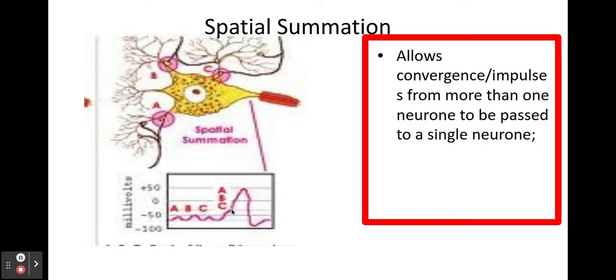But if all are triggered at the same time, if all release neurotransmitter at the same time it allows convergence of those signals so that I'm going to get depolarisation of my postsynaptic membrane. It also again allows you to filter out background or low level stimuli because if only one of these membranes was to release neurotransmitter I'm not going to get an action potential in my postsynaptic membrane.